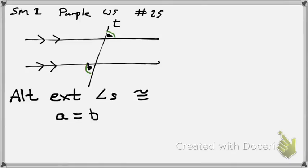So now, in the actual problem, it tells me that this is 10x plus 4, and this is 9x plus 12. So what do I do?